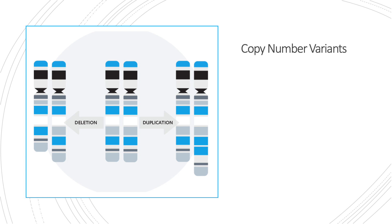Amongst mutations, copy number variants, which are CNVs, are variations between individuals through a number of copies of a DNA region, which can be duplicated, inserted, or deleted.